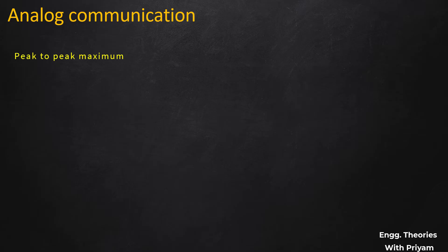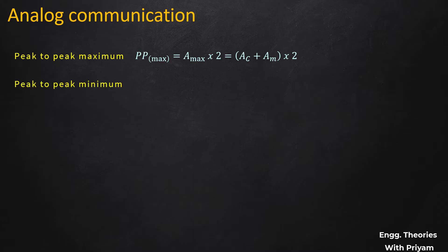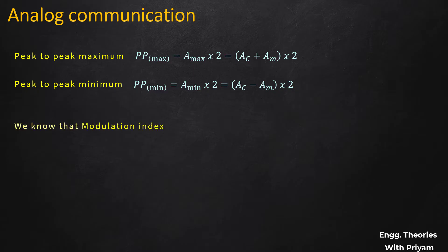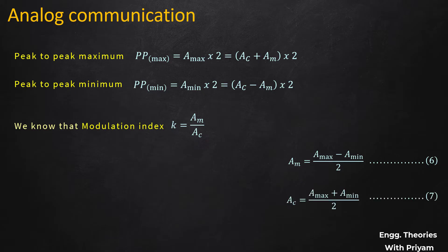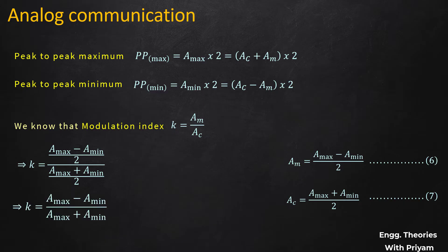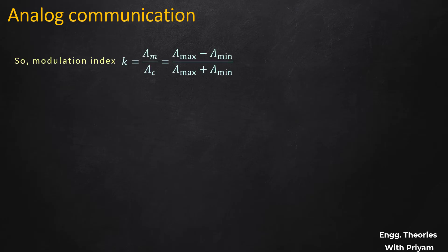The peak-to-peak maximum of the modulated signal Pb_max = 2·A_max = 2·(Ac + Am). The peak-to-peak minimum Pb_min = 2·A_min = 2·(Ac − Am). Substituting the values of Am and Ac from Equations 6 and 7, the modulation index k = Am/Ac = (A_max − A_min) / (A_max + A_min).